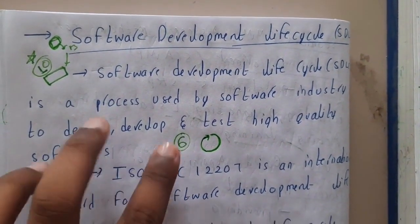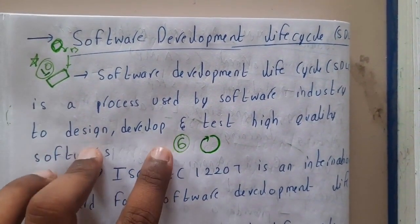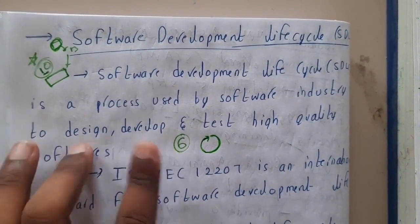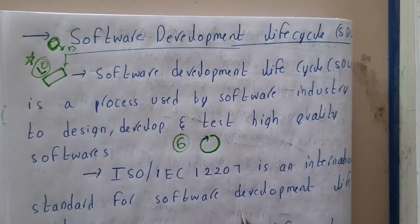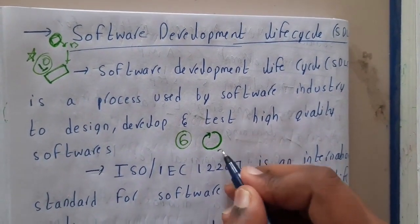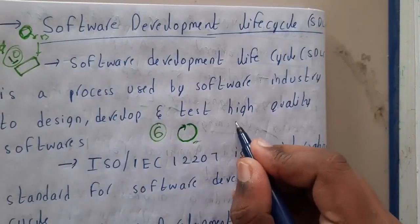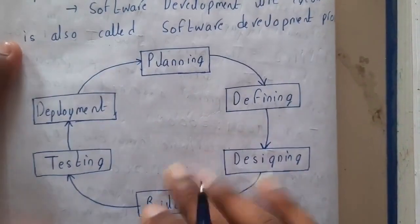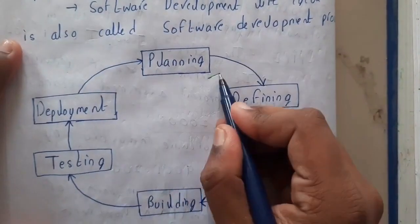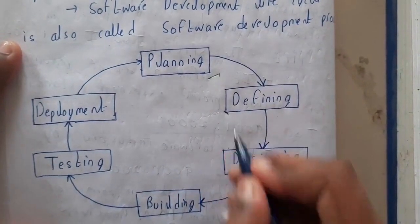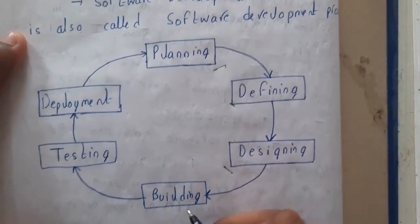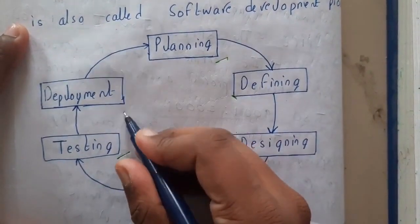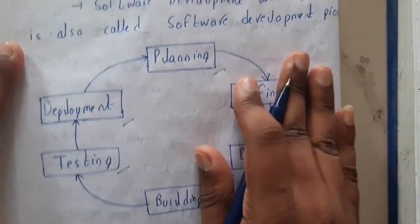This loop continues until the agreement between the company and the client ends. So basically this is a six-step process. The six steps are: planning, defining, designing, building, testing, and deployment.